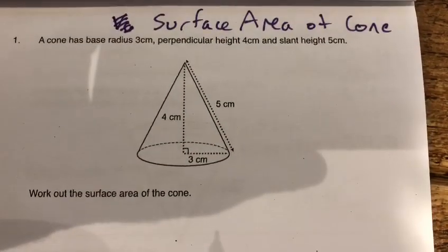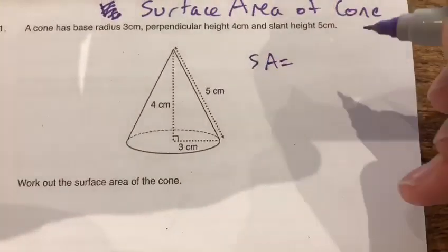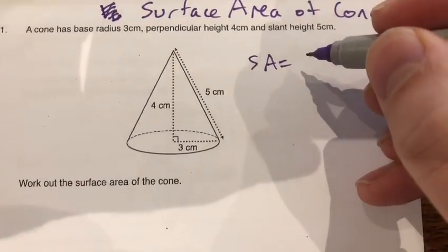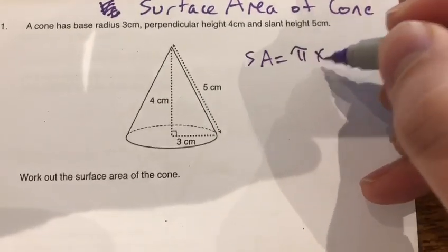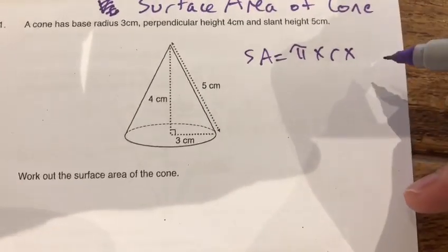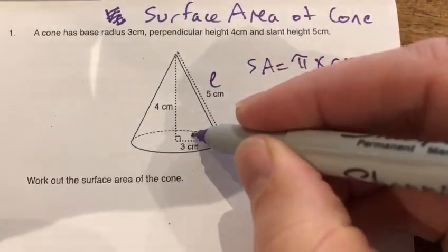Surface area of a cone, we've got a formula, which is the curved surface area, which is pi r radius times the slant height. So this one here is the slant, and we call that L, and that's the radius there.